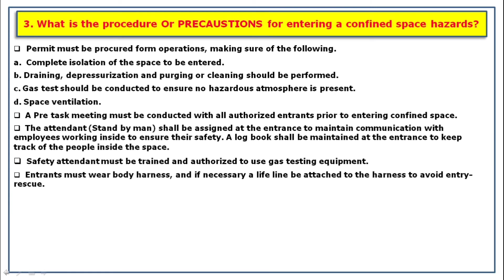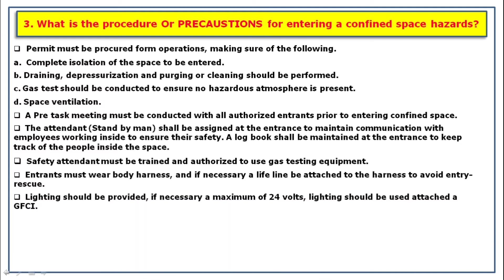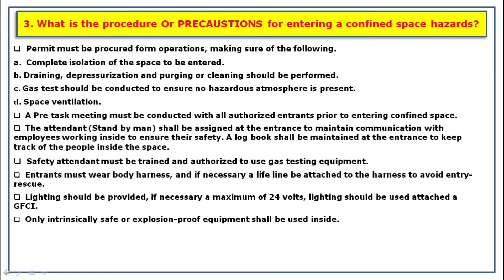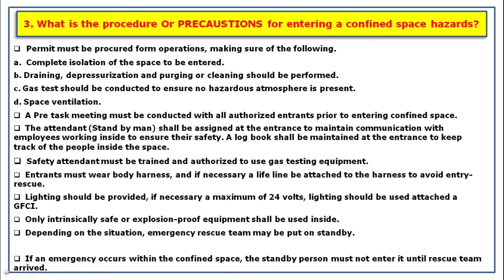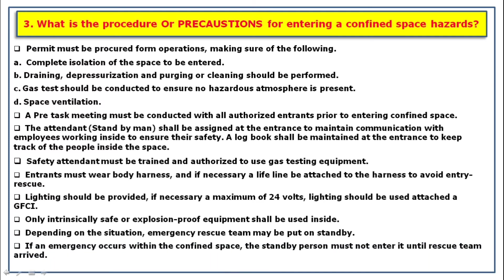A logbook shall be maintained at the entrance to keep track of people inside the space. The safety attendant must be trained and authorized to use gas testing equipment. Entrants must wear a body harness and, if necessary, a lifeline shall be attached. Lighting should be provided — maximum 24 volts lighting attached to a GFCI. Only intrinsically safe or explosion-proof equipment shall be used inside. Depending on the situation, an emergency rescue team may be put on standby. The standby person must not enter until the rescue team arrives. The area must be validated with warning signboards.